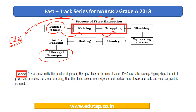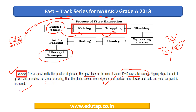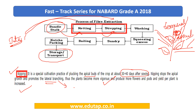Then we have nipping. It is a special cultivation practice of plucking the apical buds of the crop at about 30 to 40 days after sowing. Nipping stops the apical growth and promotes lateral branching. Thus the plants become more vigorous and produce more flowers and pods, and yield per plant is increased. So we pluck away these apical buds so that instead of growing upward, the plant grows laterally and branches out more.